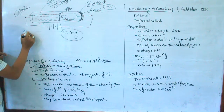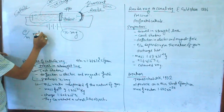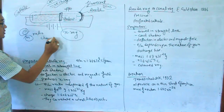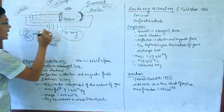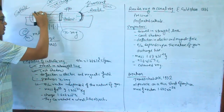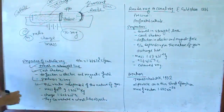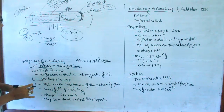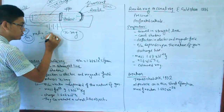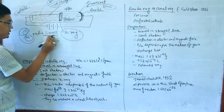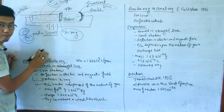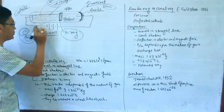The e/m ratio — charge to mass ratio — is a key property. The e/m ratio does not depend on the nature of the gas or the material of the cathode. For any gas used in the cathode ray tube, the e/m ratio remains the same. This is a very important point.